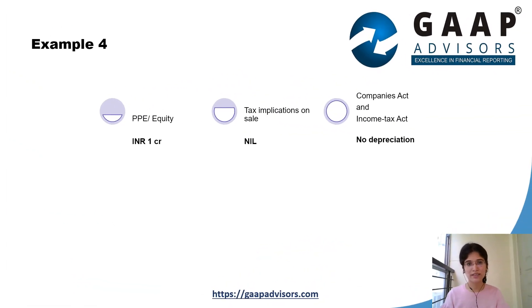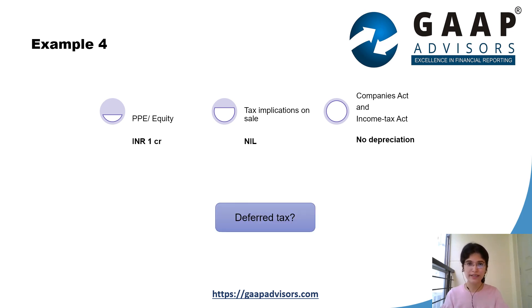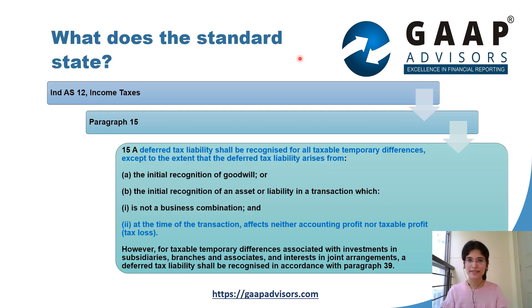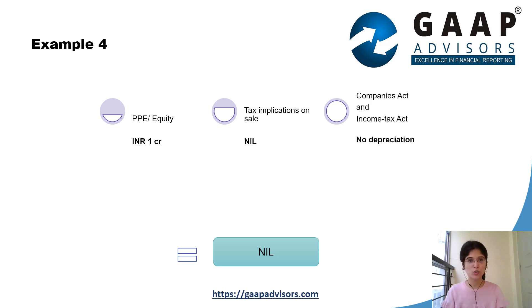Now take another example. Assume that the land has no tax implications on sale — that is, neither any gains are taxable nor any losses are deductible. As per the initial recognition exemption of Ind AS 12, a deferred tax liability shall not be recognized when it arises from the initial recognition of an asset in a transaction which is not a business combination and at the time of the transaction it affects neither accounting profit nor taxable profit. Accordingly, no deferred tax liability will arise in this case.